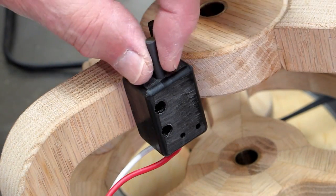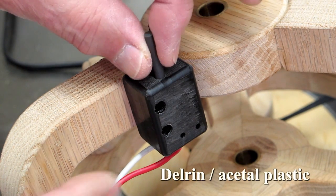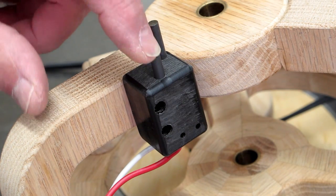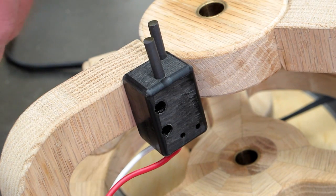I machined this block out of Delrin. Drilled these holes so when the spring goes in here, it makes contact with the wire. And then this carbon brush will make spring-loaded contact with the slip ring.